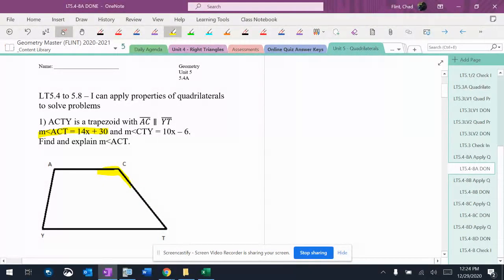ACT is that angle right there. CTY is that angle right there. So you have those two angles.